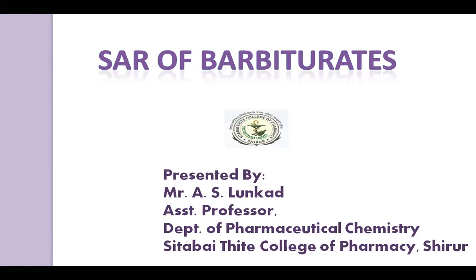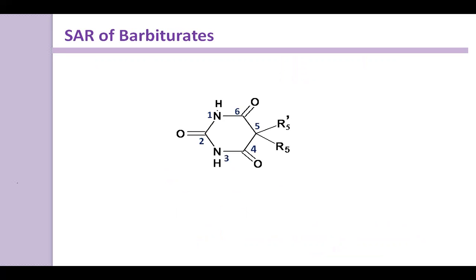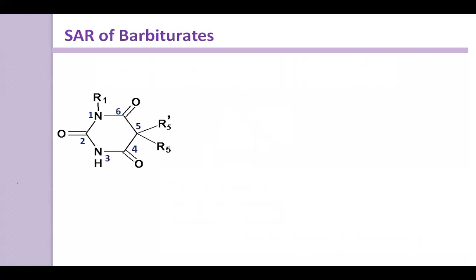In this structural activity relationship of Barbiturates, we discuss how we can increase lipid solubility. Here is the structure of Barbiturates with numbering. We make substitutions at the C5 position carbon and can also replace the hydrogens attached to nitrogen. This compound is a 5,5-disubstituted Barbituric Acid, and we discuss the SAR points considering this general structure.